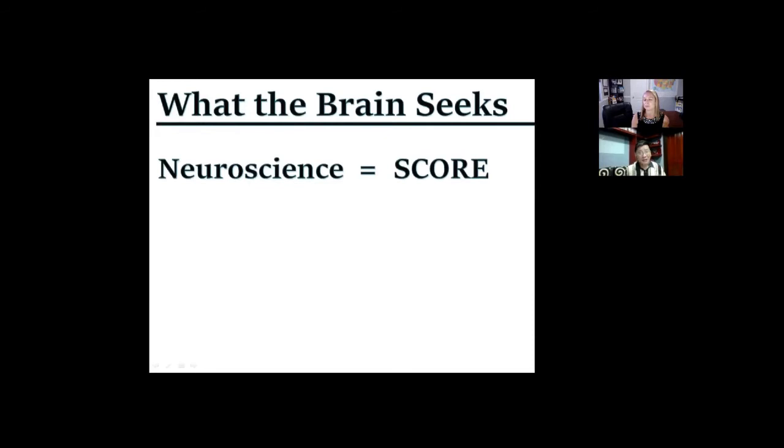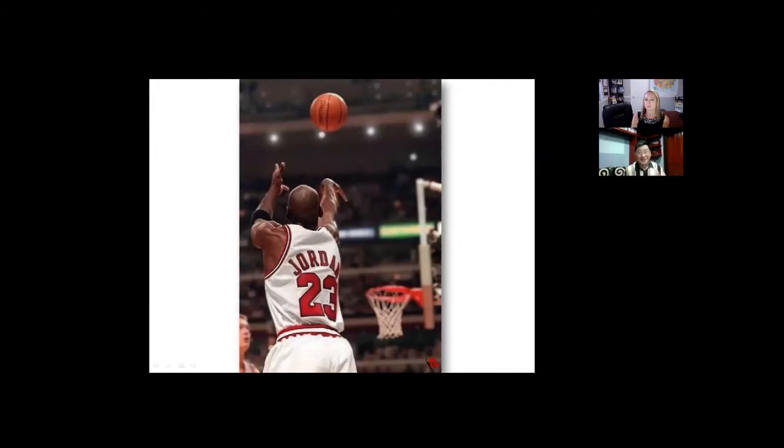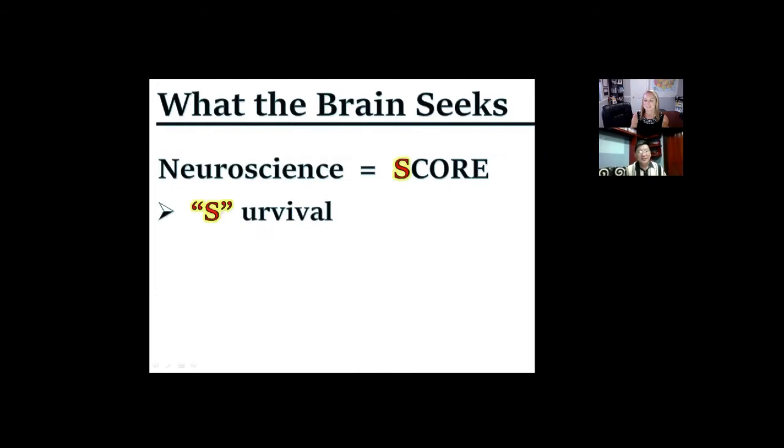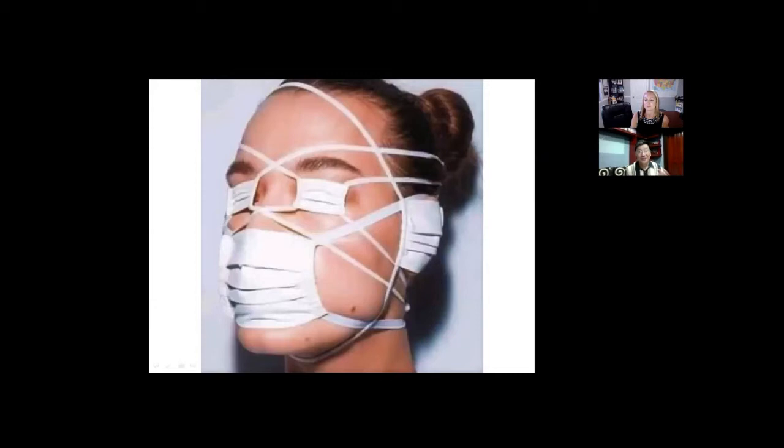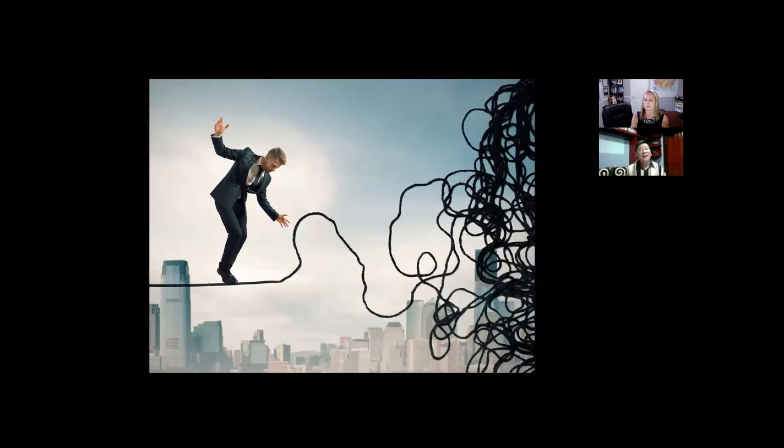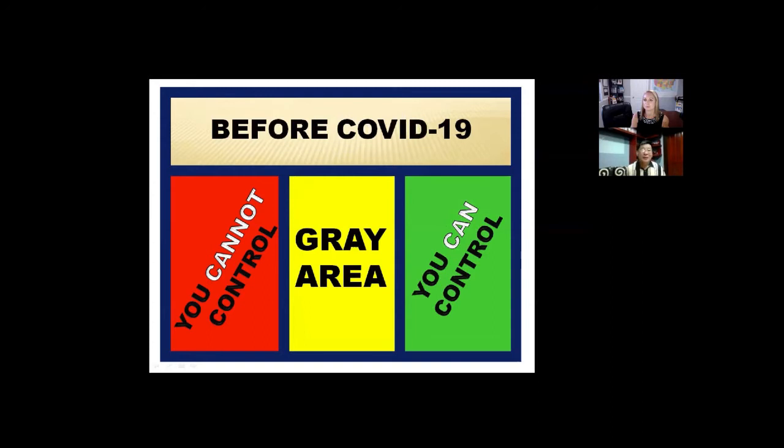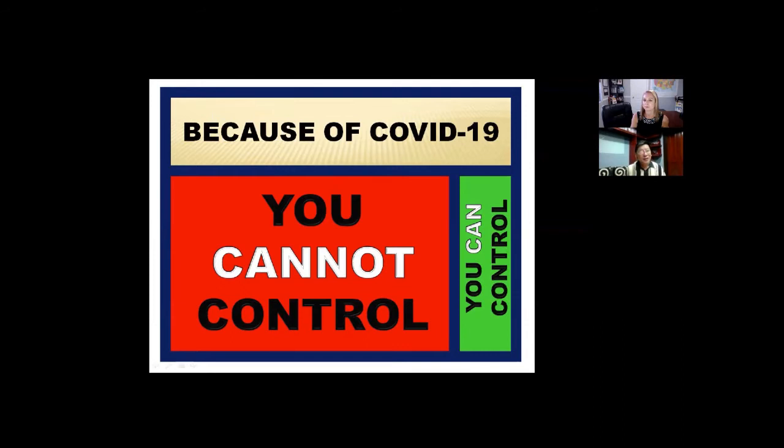What does the brain seek? The brain seeks SCORE: Survival, Certainty, and Relationships. Our brain is programmed for survival. It's constantly on the lookout for threats, whether real or perceived. The brain craves certainty, and right now we're facing so much uncertainty. We don't know when the vaccine will be discovered.